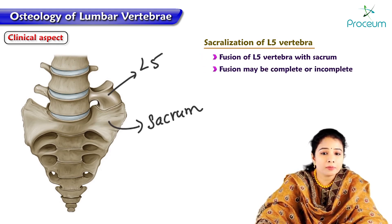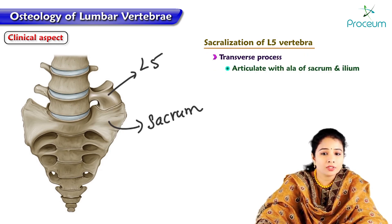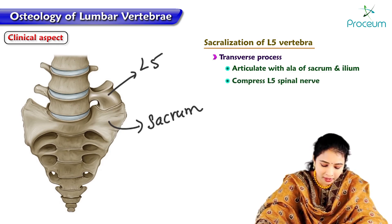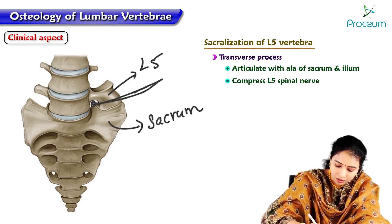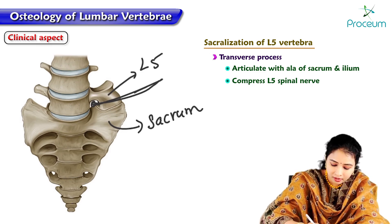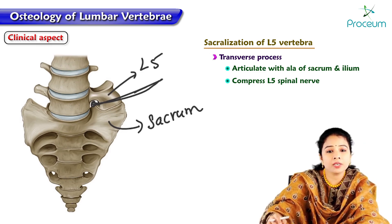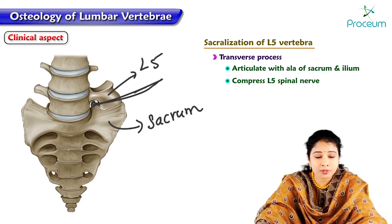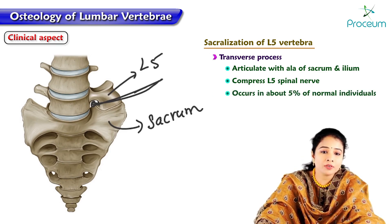The fusion may be complete or incomplete. The transverse process of L5 may articulate with the ala of the sacrum or the ilium and compress the L5 spinal nerves. Because of sacralization and overgrowth of the bone, the L5 nerve may get compressed in the intervertebral foramen. This condition occurs in about five percent of individuals.